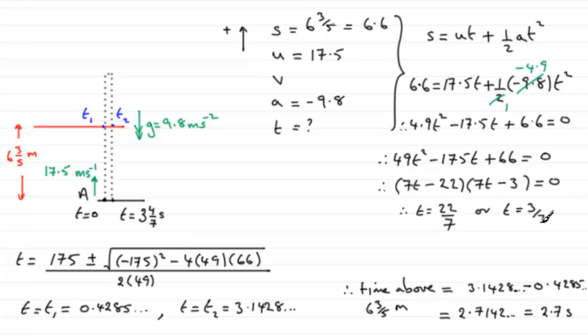You can see, you might want to check it out, but 3 sevenths as a decimal is this value here and 22 sevenths is this time here. So when it comes to the time above six and three-fifths meters, we could just subtract these two, so we would have therefore the time above six and three-fifths meters equals 22 sevenths minus 3 sevenths, and that turns out to be 19 sevenths seconds. So you've got either this decimal approach or the factorization approach. It's a bit cramped, I just wanted to keep it on the one screen though, so I hope you can see that. But there you go, that's how I would approach that problem.